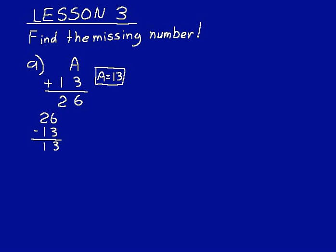We have a fact family here. A equals 13; we added it to that 13 and got 26. And look at our subtraction problem: 26 minus 13 equals 13. We have three numbers that we can arrange to form an addition fact and also a subtraction fact. When you subtract an addend from the sum, you can figure out what the other addend is. You can take the difference between the sum and the addend to find the missing addend.